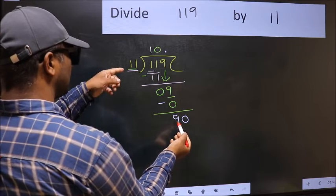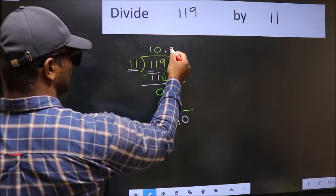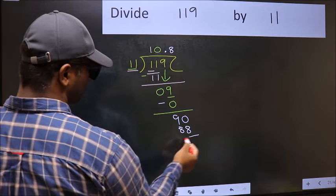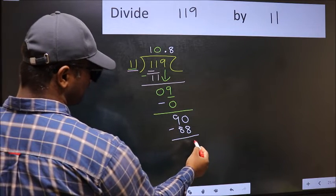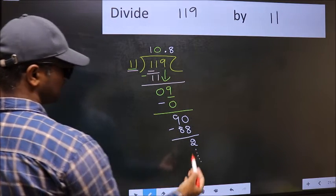A number close to 90 in the 11 table is 11 times 8, which is 88. Now you should subtract. We get 2, and continue the division.